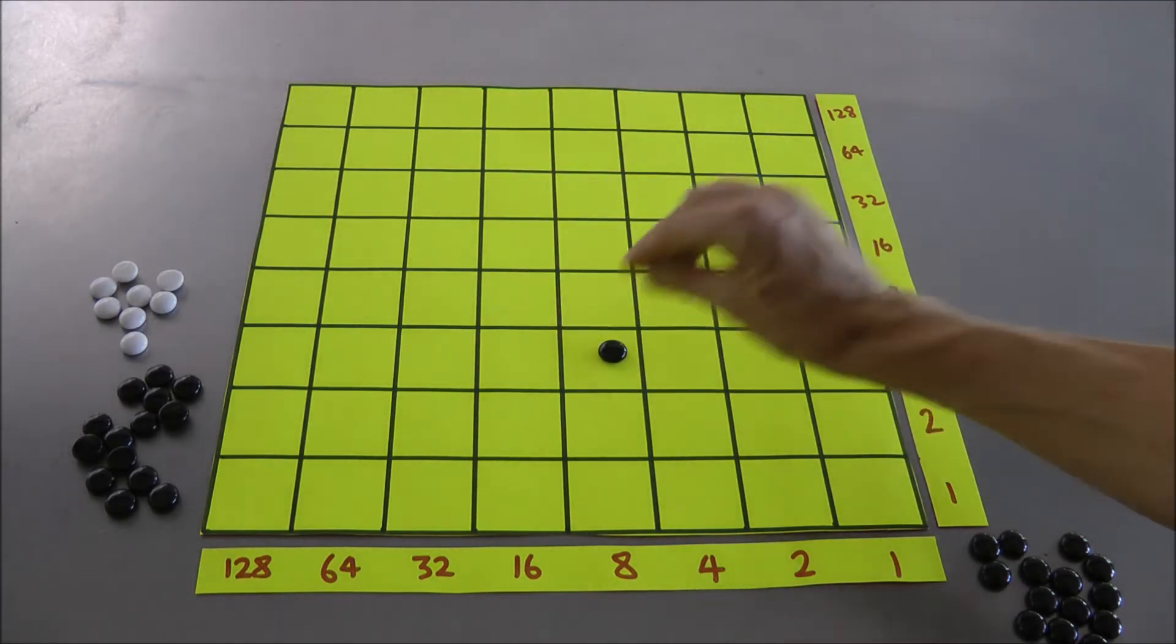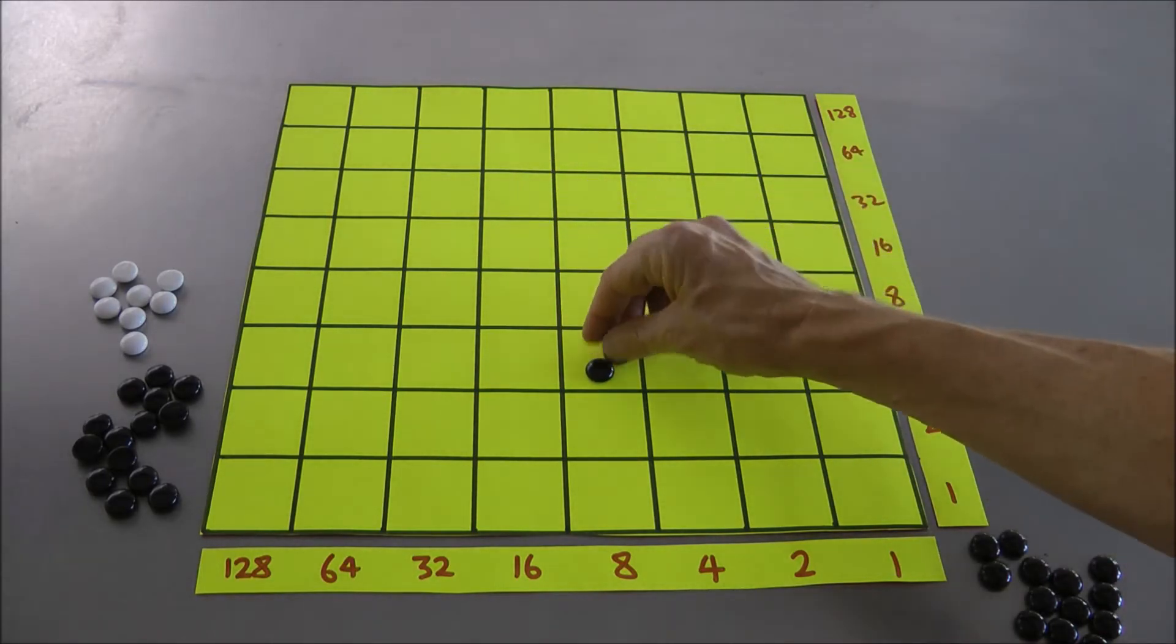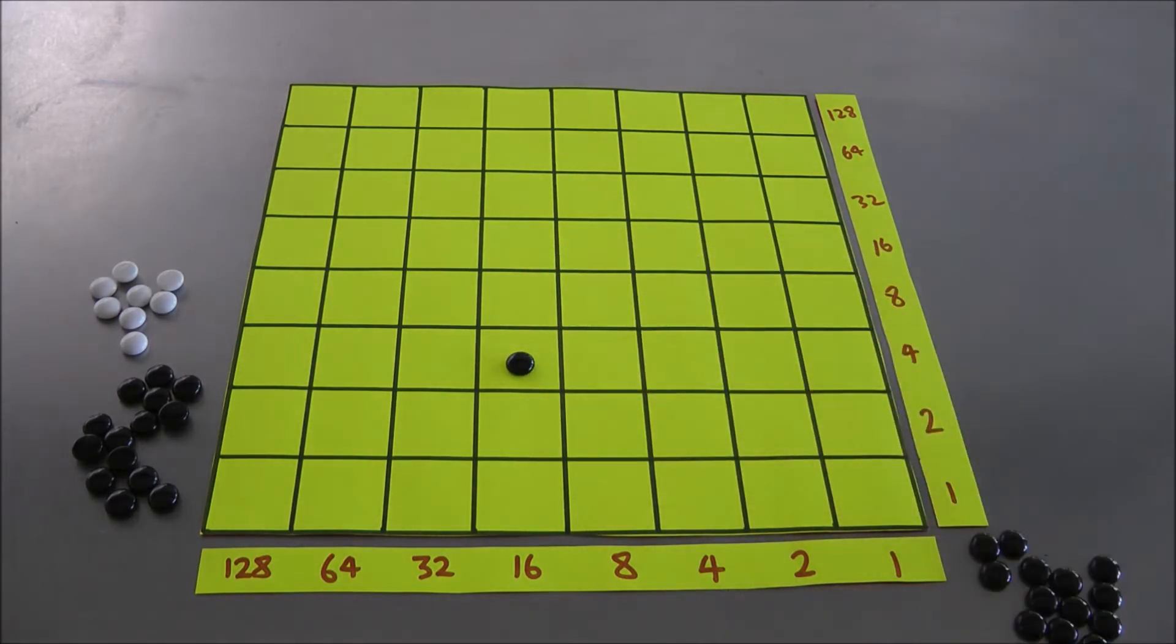Now have we lost the 2-1-ness by the rows? For example, I've put 2 dots here, are they still worth 1 dot, 1 place to the left? Let's find out.